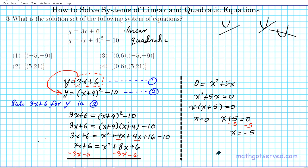So there are the two x values for our solutions. We can automatically eliminate 1 and 2. We can also eliminate 4 because the only option where x is 0 and negative 5 is option 3.